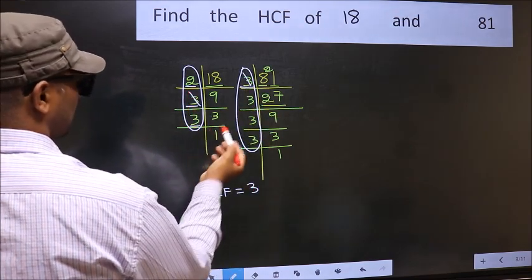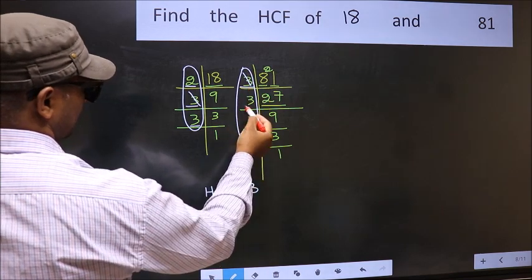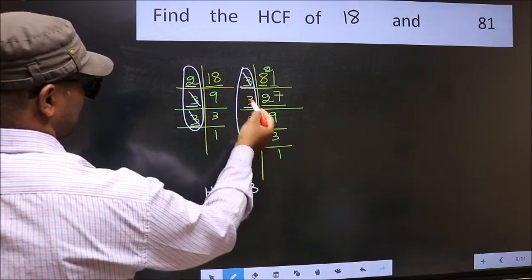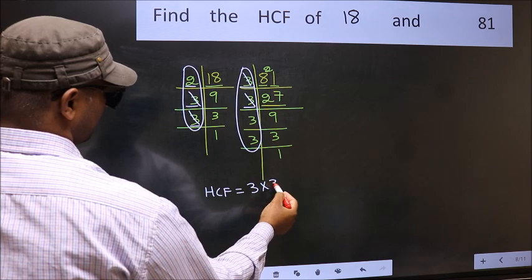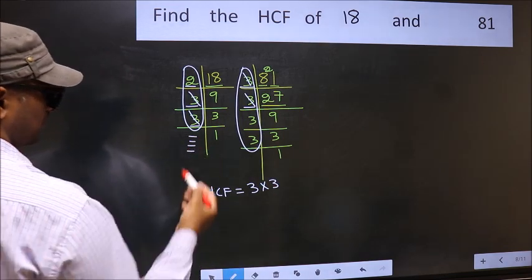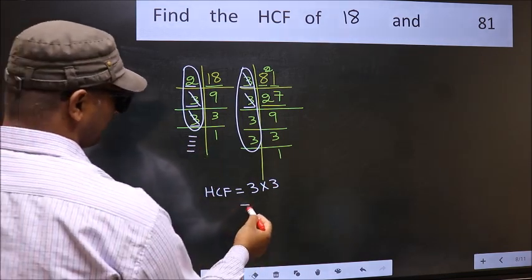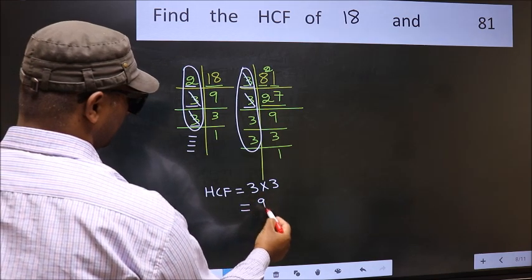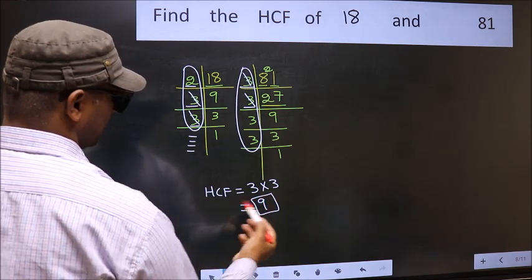Next number 3. Do we have 3 here? Yes. So cut 3 right here. No more numbers have been left out. So our HCF is 3 times 3. 9 is our HCF.